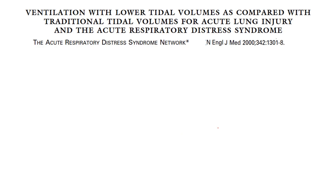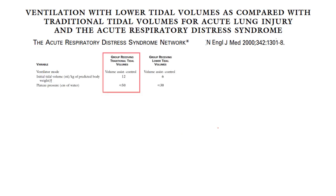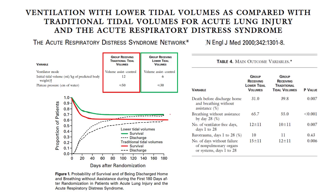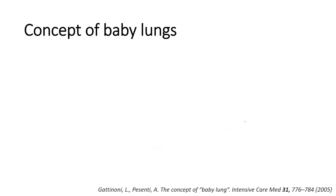The landmark trial in the year 2000 compared 12 cc per kg with 6 cc per kg ideal body weight, targeting plateau pressures of less than 30. The lower tidal volume strategy had higher survival — mortality was 31% versus 39.8%. Breathing without assistance and number of vent-free days were also significantly better in the lower tidal volume group.